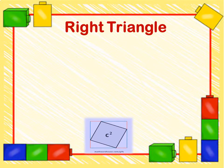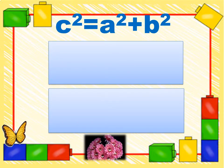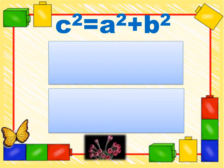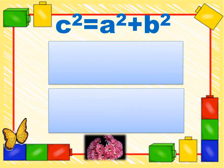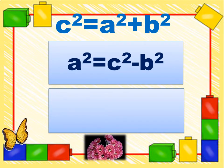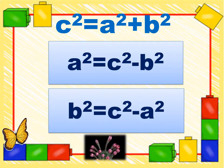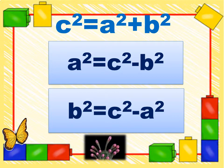As you can see, this theorem doesn't apply to all triangles. It only applies to right triangle which has 90 degrees angle. We have to remember the formula of this Pythagorean theorem, which is c² = a² + b². The hypotenuse equals the sum of the square of the two sides. By deriving the formula, we can solve A and B using these formulas: a² = c² - b² and b² = c² - a².